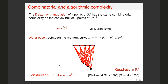The algorithmic aspect is that you can compute the Delaunay triangulation by first computing the convex hull and then projecting the result. Using Clarkson and Shor's randomized algorithm or Chazelle's deterministic algorithm, you get an optimal bound of O(n log n + n^{⌈D/2⌉}) for computing Voronoi diagrams in the worst case.